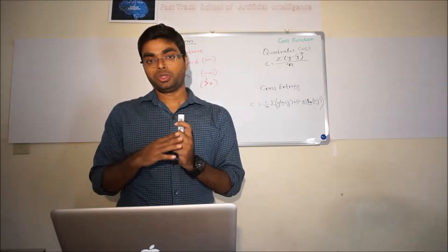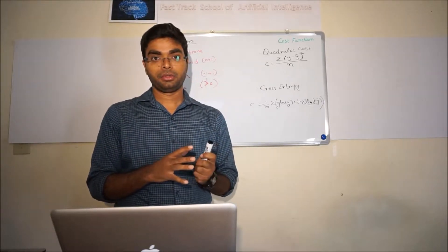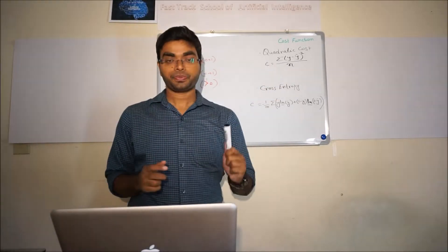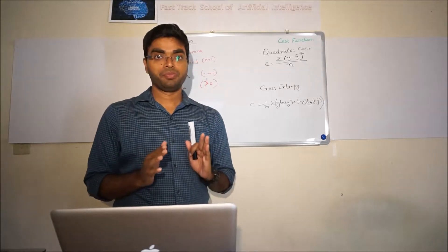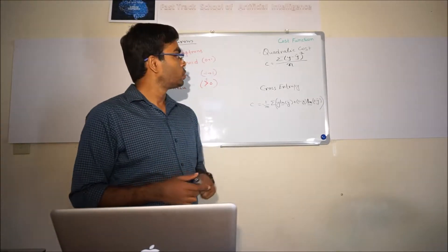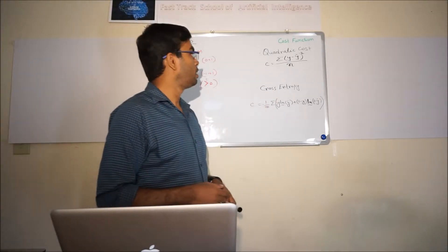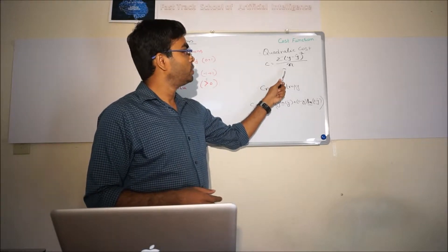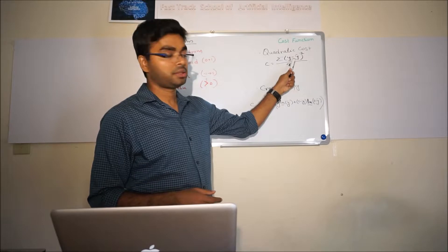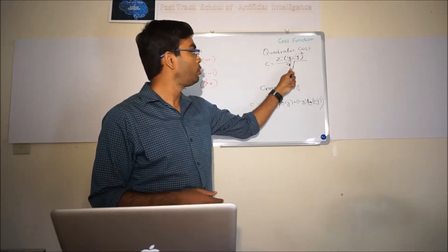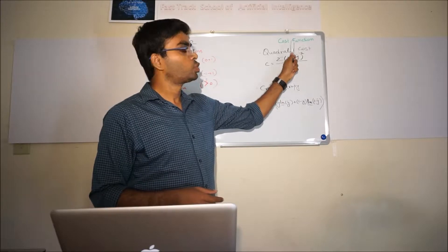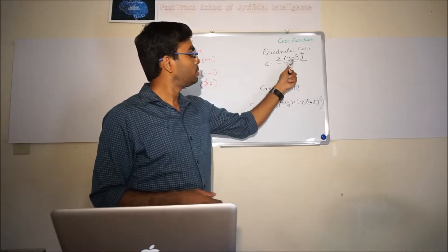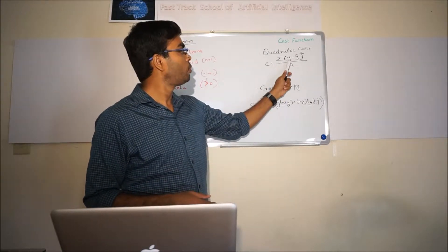Particularly, we're going to discuss two different kinds of cost functions. First is quadratic cost function, sometimes also known as mean square error. I've written down the equations already. The cost function is equal to the sum of errors between true class and predicted values, squared, and we're taking the average.